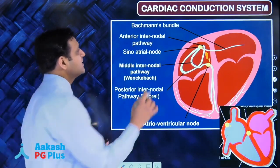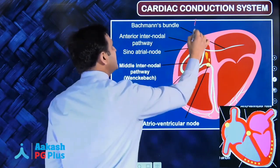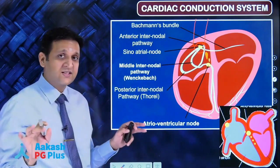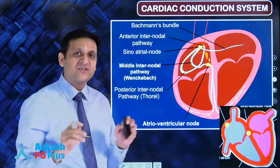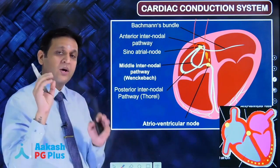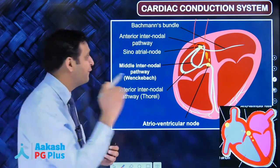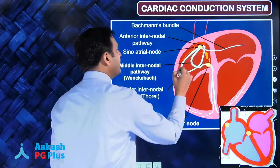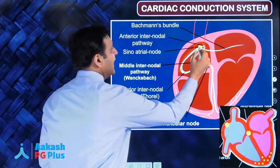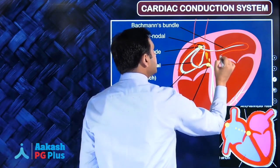The big boss is the SA node, situated at the junction of superior vena cava and the right atrium. This specialized tissue fires at a rate of 60 to 100 per minute. The electrical depolarization from the SA node spreads first to the right atrium via the three internodal pathways, and second through Bachmann's bundle to the left atrium.